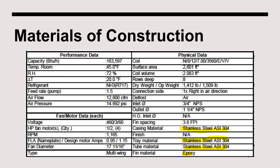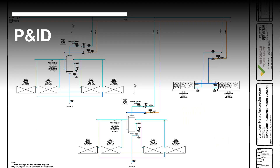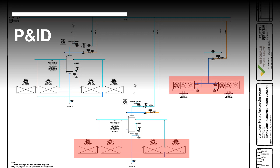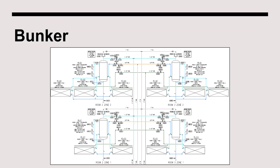Here is a closer look at the table from the drawing. The piping and configuration for air cooling evaporators can vary from one system to another, so as it pertains to the P&ID, each diagram should be specific to the evaporator. Here is an example of a P&ID for a system with flooded, bunker mounted evaporators.